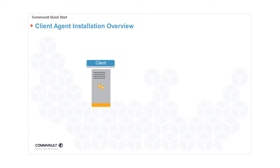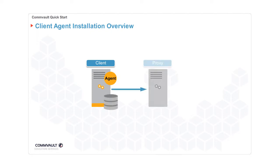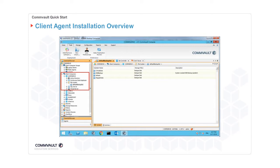A client is any production system that is protected by Commvault software. Clients use agents to protect the data by installing the agent directly on the client or using a proxy client. When an agent is deployed to a client, it appears in the CommCell browser under the client computer entity. To protect physical servers, let's look at how to install client agents.